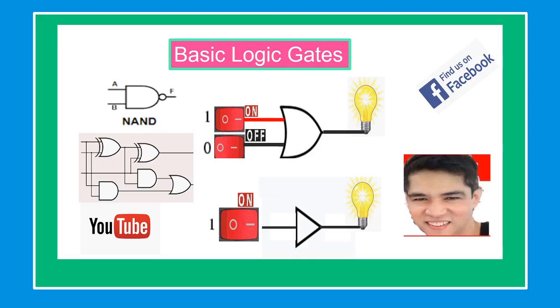Our topic for today is basic logic gates. Logic gates are the basic building blocks of any digital system. It is an electronic circuit having one or more than one input and only one output. Boolean logic is represented by two states: true or false, or one or zero.